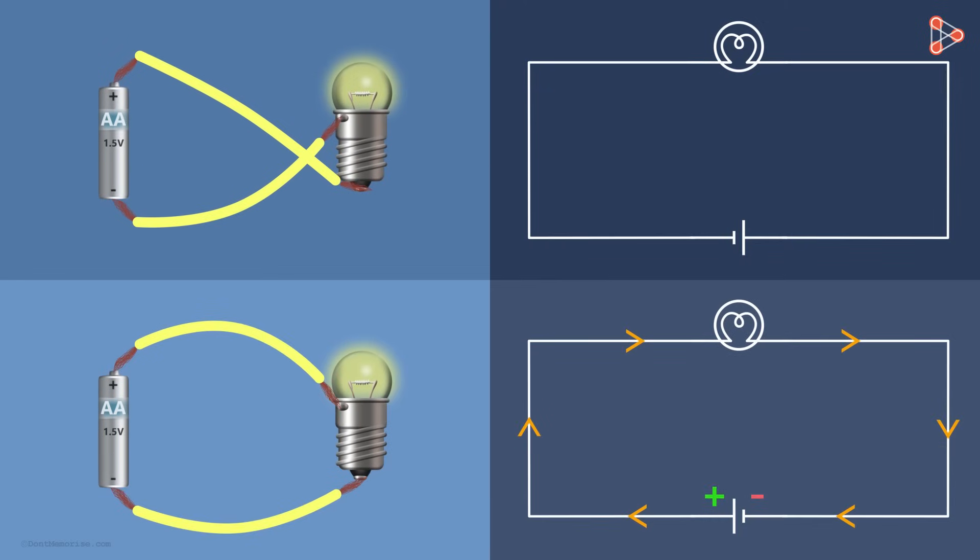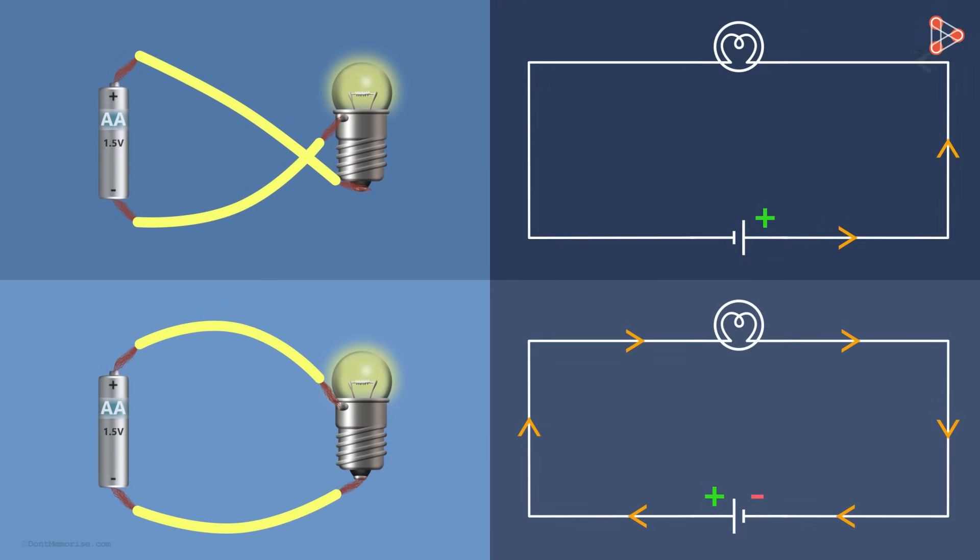Compare it with this one. You see that we've just reversed the direction of the battery. Hence the electric current in this circuit is flowing in the opposite direction. So the electric current can flow in either direction.